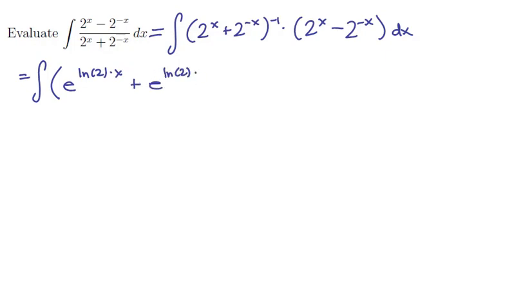So we're going to have e to the ln 2 times x for the first term and e to the ln of 2 times negative x for the second term, and then we're going to repeat this for both the part in the minus 1 parentheses and the part without the minus 1.